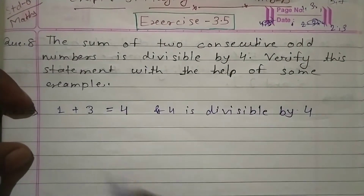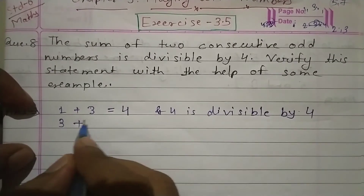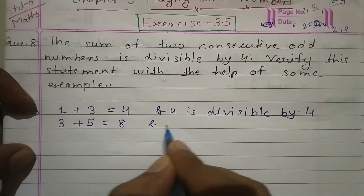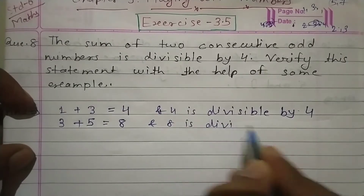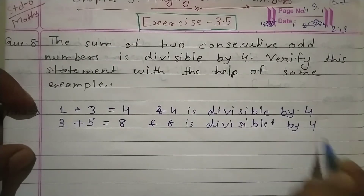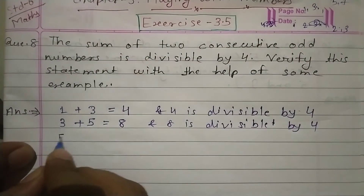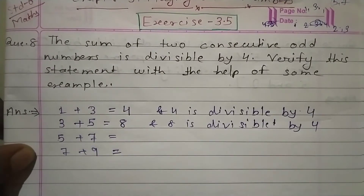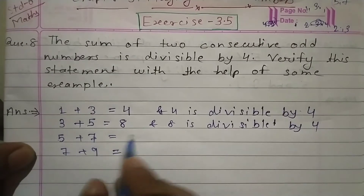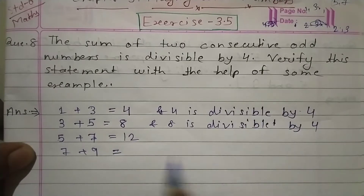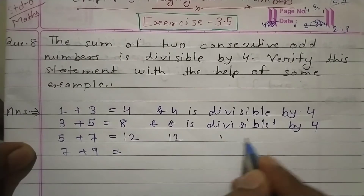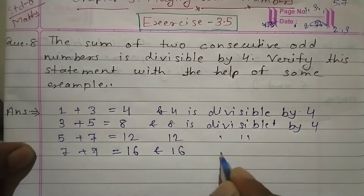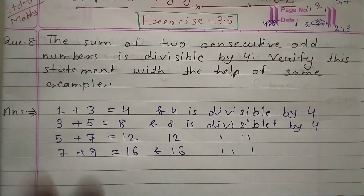For the third example, take 5 and 7 — these are two consecutive odd numbers. 5 plus 7 equals 12, and this 12 is divisible by 4. Then for the fourth example, 7 plus 9 equals 16, and this 16 is also divisible by 4. In this way, you can write three to four examples here. This completes question number eight.